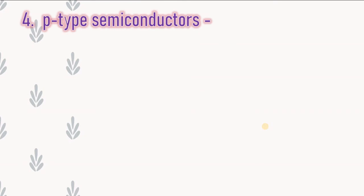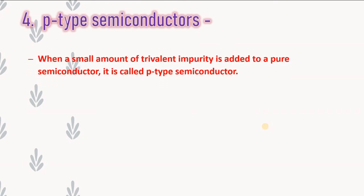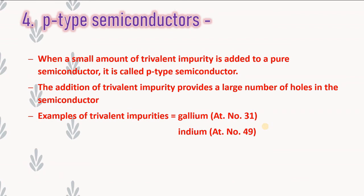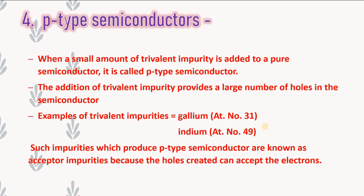Now the last topic: p-type semiconductor. When a small amount of trivalent impurity is added to a pure semiconductor, it is called a p-type semiconductor. Tri means three — the atom having three valence electrons is called trivalent. The addition of trivalent impurity provides a large number of holes in the semiconductor. Examples of trivalent impurities are gallium and indium. Such impurities which produce a p-type semiconductor are known as acceptor impurities because the holes created can accept electrons.